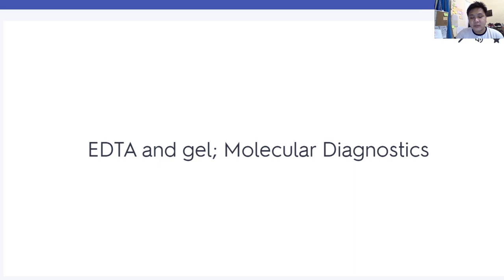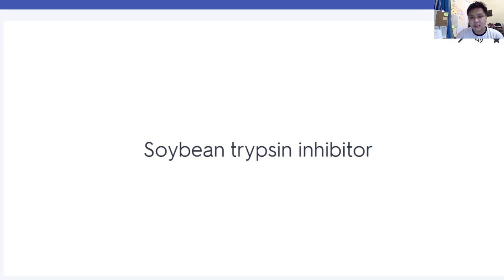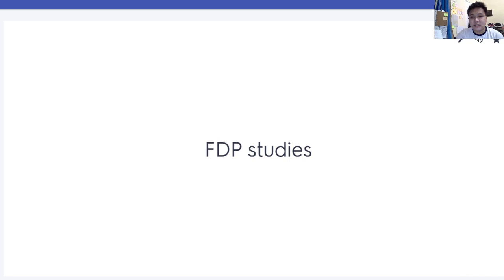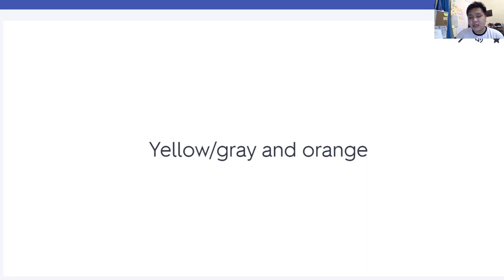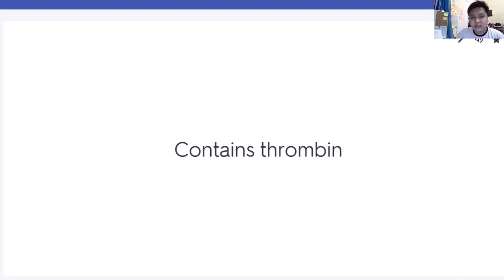White top is used for molecular diagnostics. Soybean trypsin inhibitor is used in your FDP studies. Royal blue top contains sodium heparin and sodium EDTA, used for toxicology. Tan top is for lead testing. Yellow, gray, or orange top contains thrombin, which is a clot activator, and compared to your red top, this allows us to prepare serum more quickly.